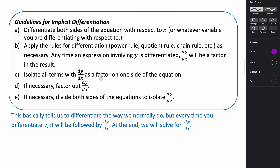So how do we do that? The basic guidelines for implicit differentiation are as follows. We just differentiate each side of our equation with respect to x, or if our variables are in terms of t, we differentiate with respect to t. All of the rules that we normally use for differentiation still apply — the power rule, quotient rule, chain rule, product rule — all of those rules still apply.